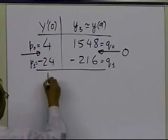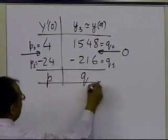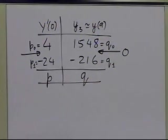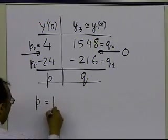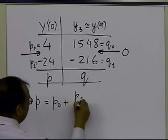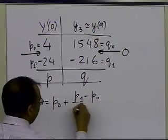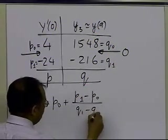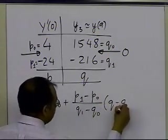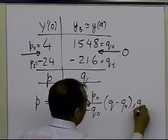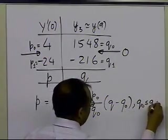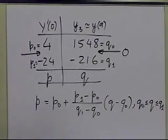so this function I'm going to call p, and this function I'm going to call q. So what that means is that p is equal to p0, plus p1 minus p0, divided by q1 minus q0, times q minus q0. This is just an equation of a straight line between q0 and q1.